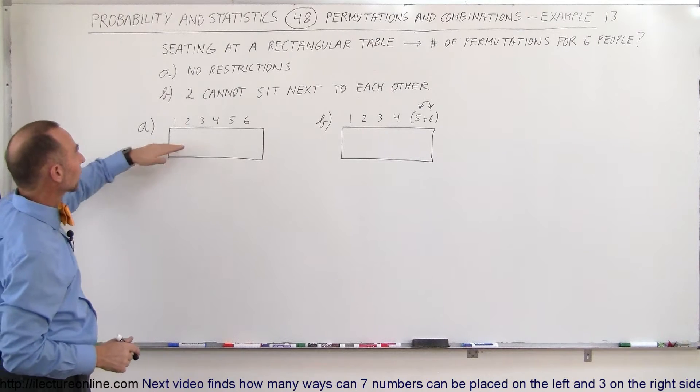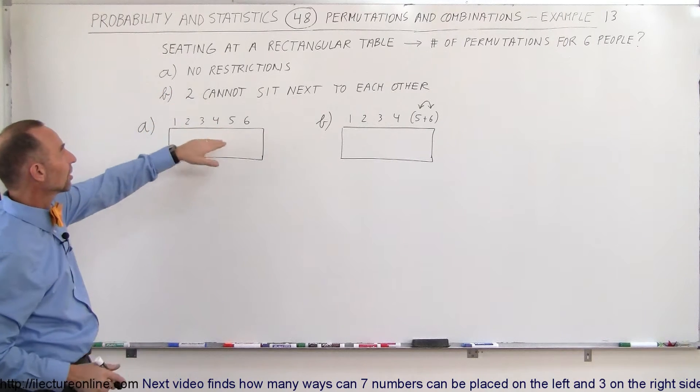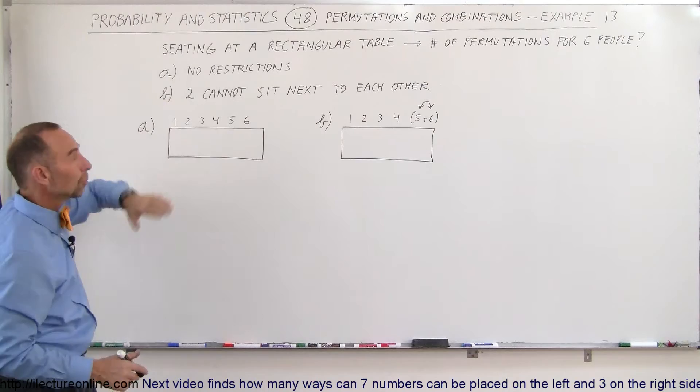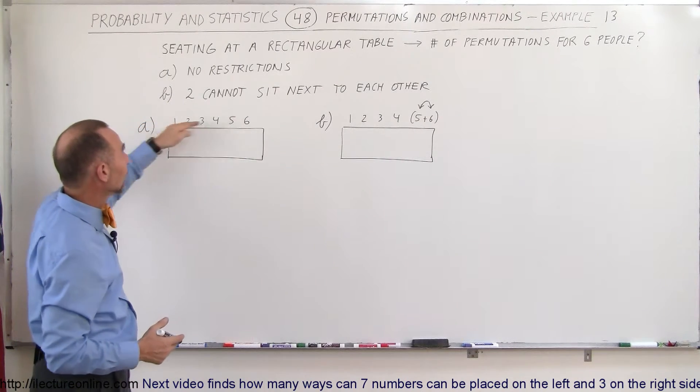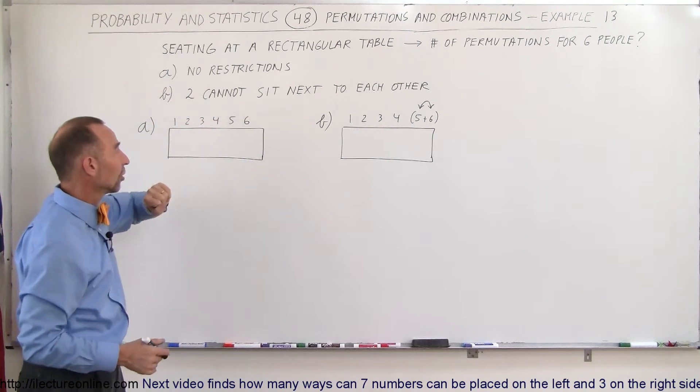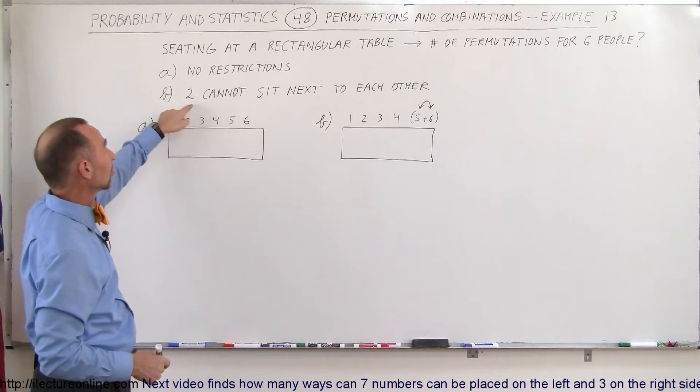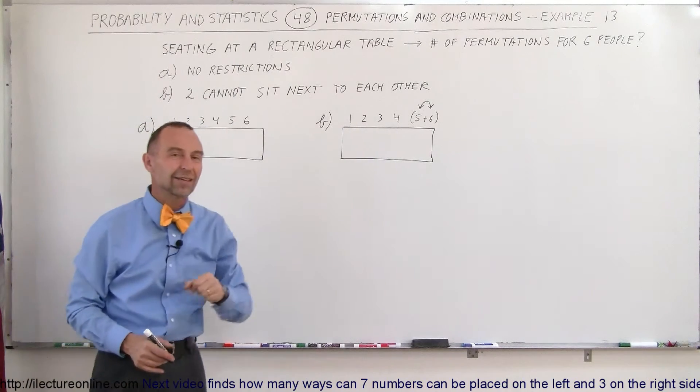Here you can see a rectangular table with six people sitting at the table. For Part A, the number of permutations will be determined with no restrictions at all, and for Part B there is a restriction where two of the six people cannot sit together.